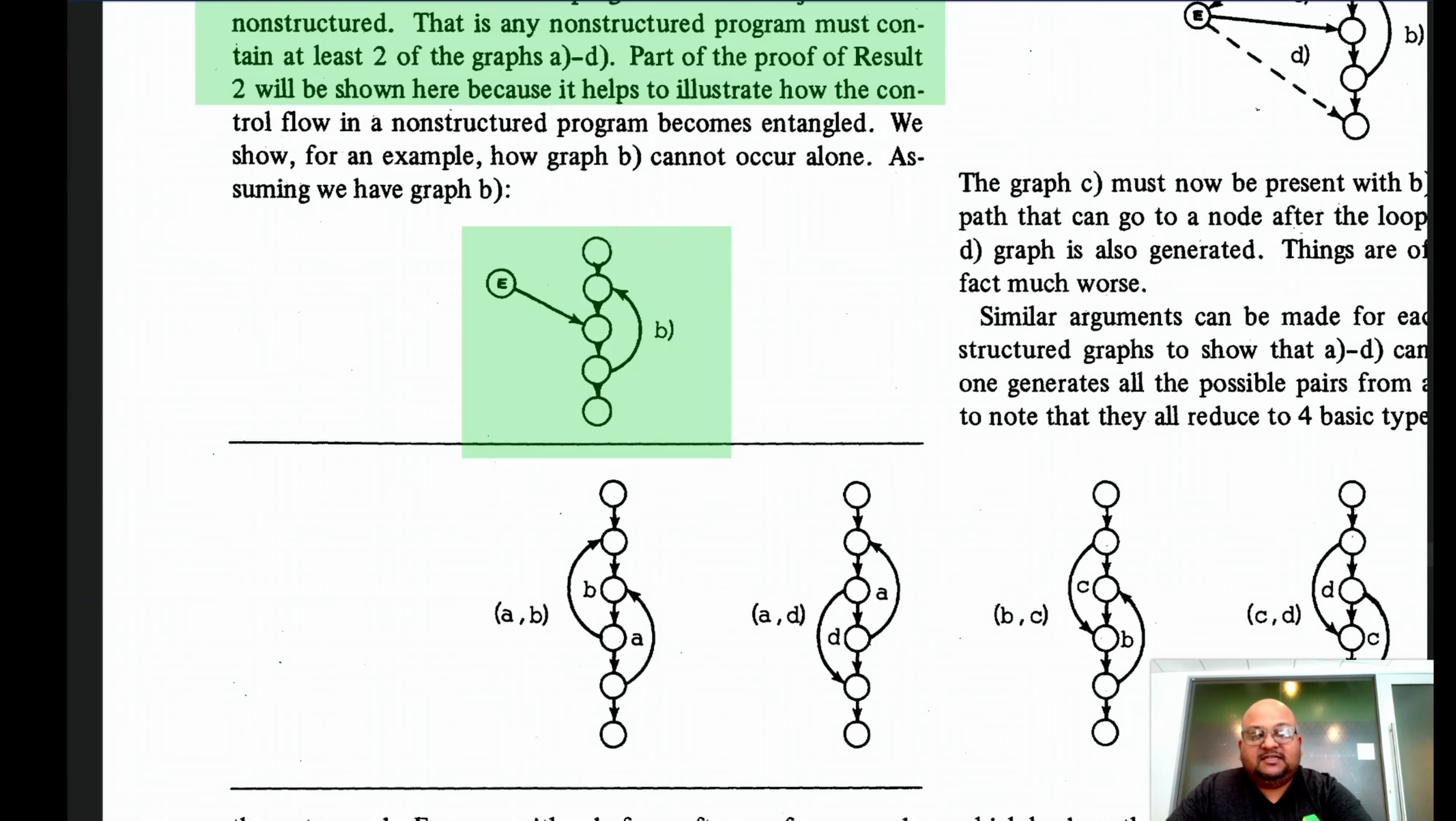To take just one example, this graph is branching into a loop. And then the question becomes, where does this node E come from? And if you run through all the cases of where it might come from, you will reach the conclusion that there must be at least two unstructured constructs within this program.